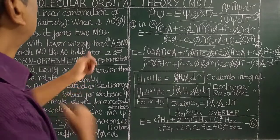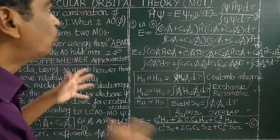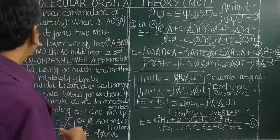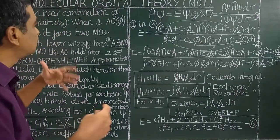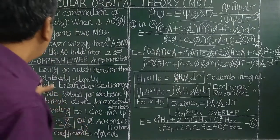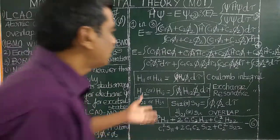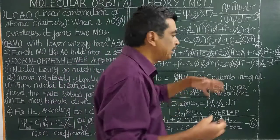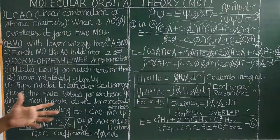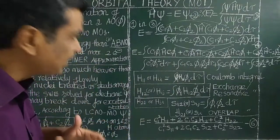Good morning. Today we will see Molecular Orbital theory (MORD), what is the linear combination of atomic orbitals (LCAO), the Born-Oppenheimer approximation, the different types of integrals — Coulomb integral, exchange integral, overlap integral — and we will derive the secular determinant and secular equation.